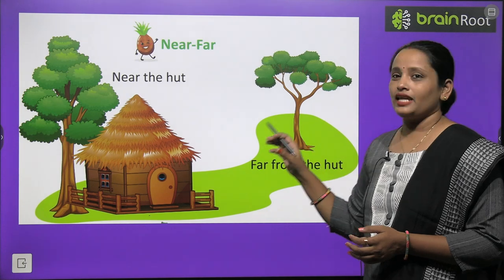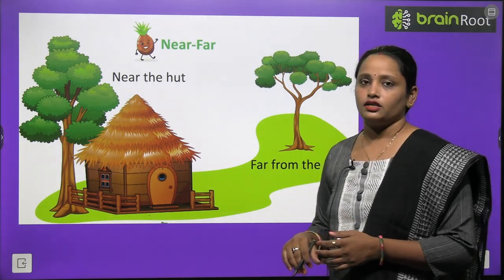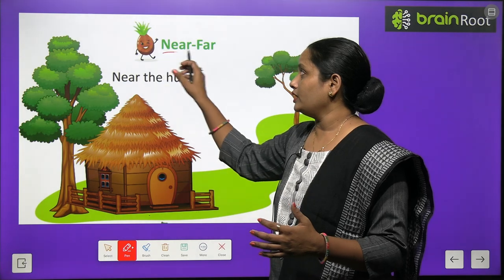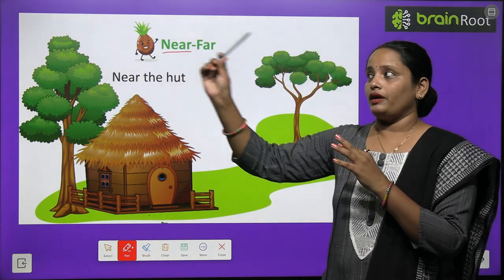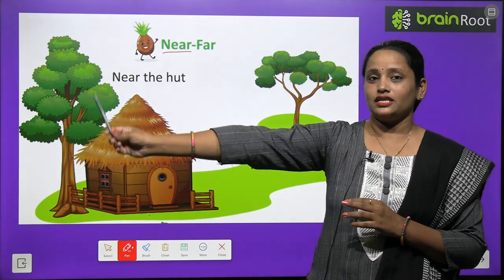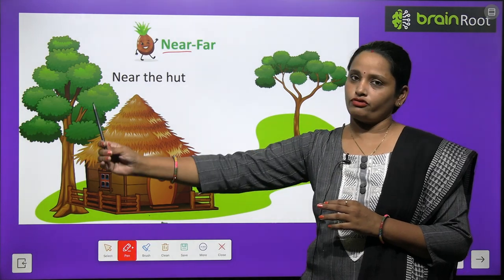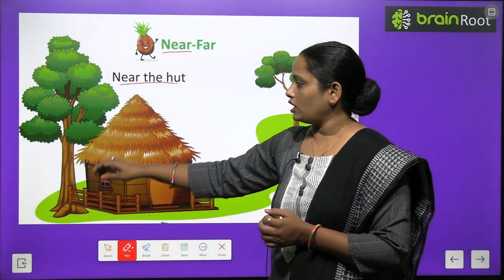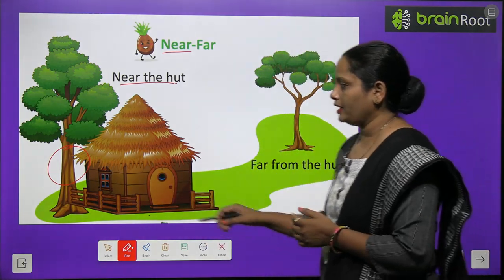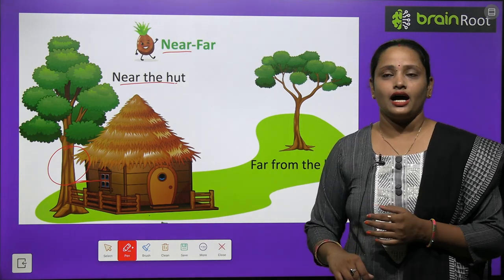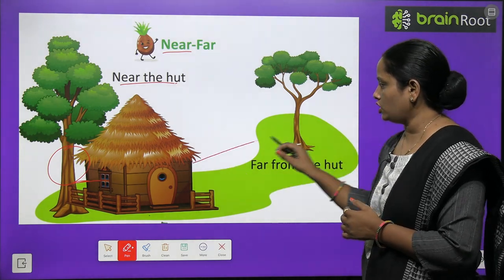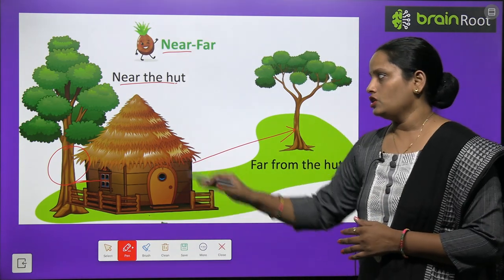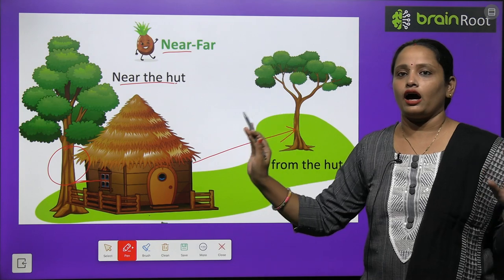Next is near and far. Near means paas, far means door. Toh near matlab paas — yeh pen mere paas hai, ab maine isse door kar diya, so far — this pen is far. Similarly, aap dekh sakte ho yahaan pe ek hut hai. Yeh jo tree hai, woh hut ke ekdam paas hai — so this tree is near the hut. Aur yahaan pe ek aur tree hai, jo kitni door hai is hut se — so this tree is far from the hut.